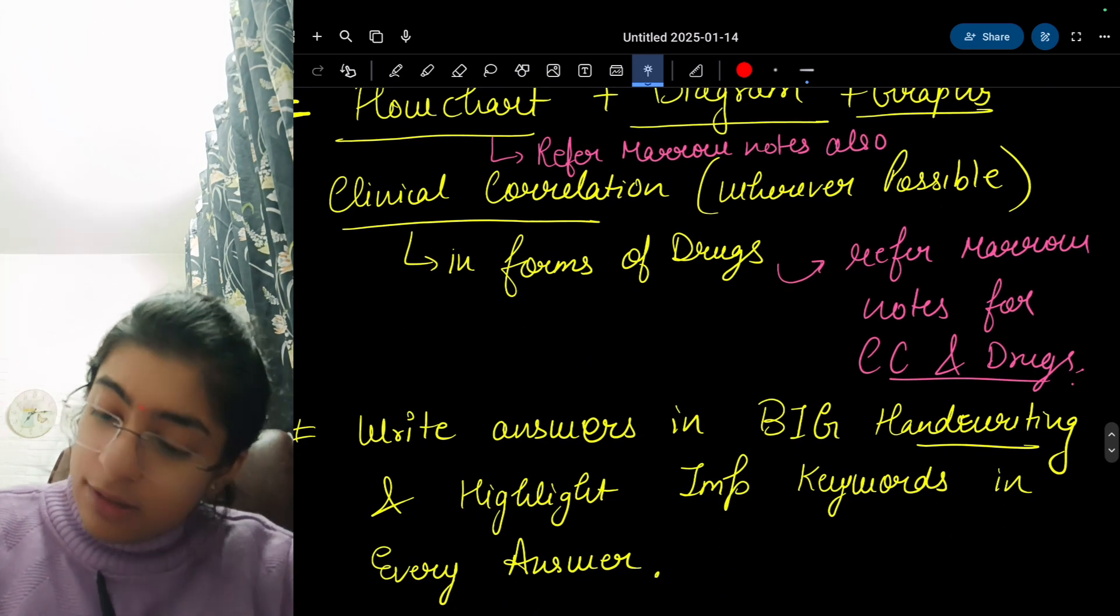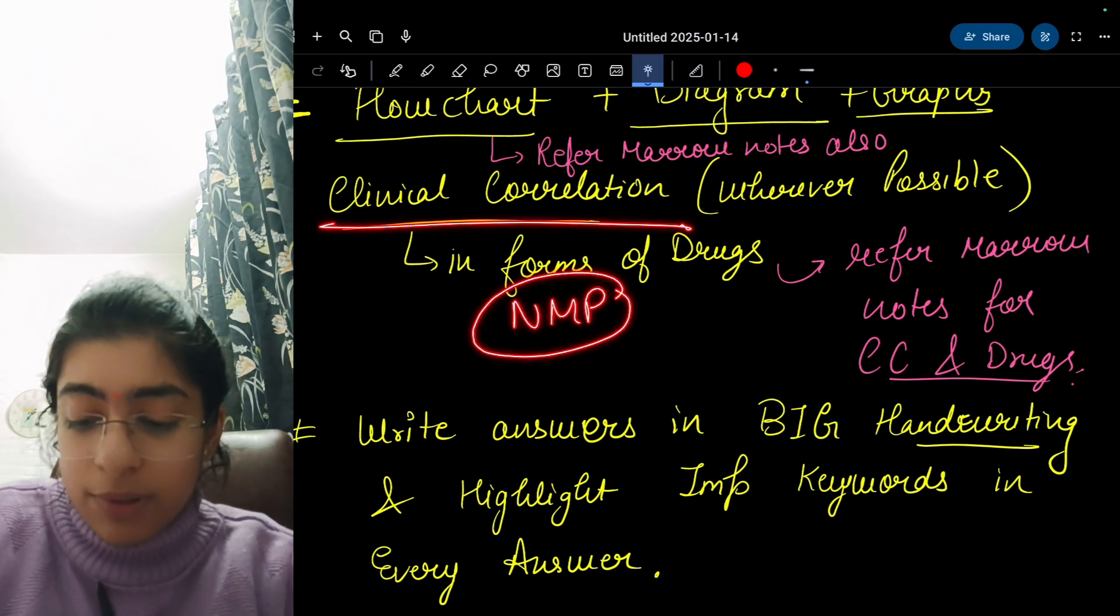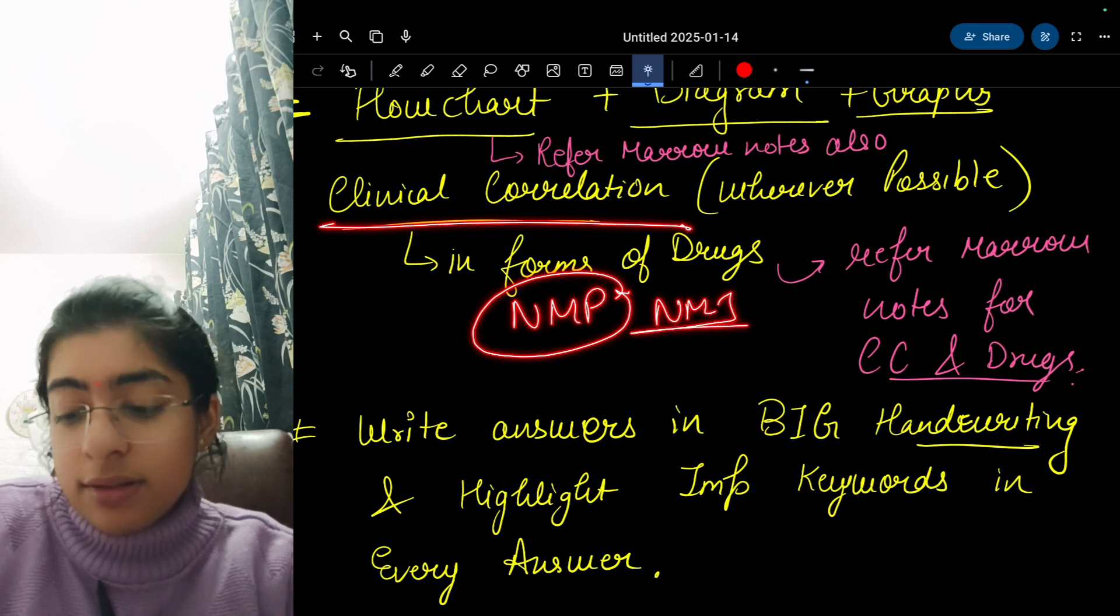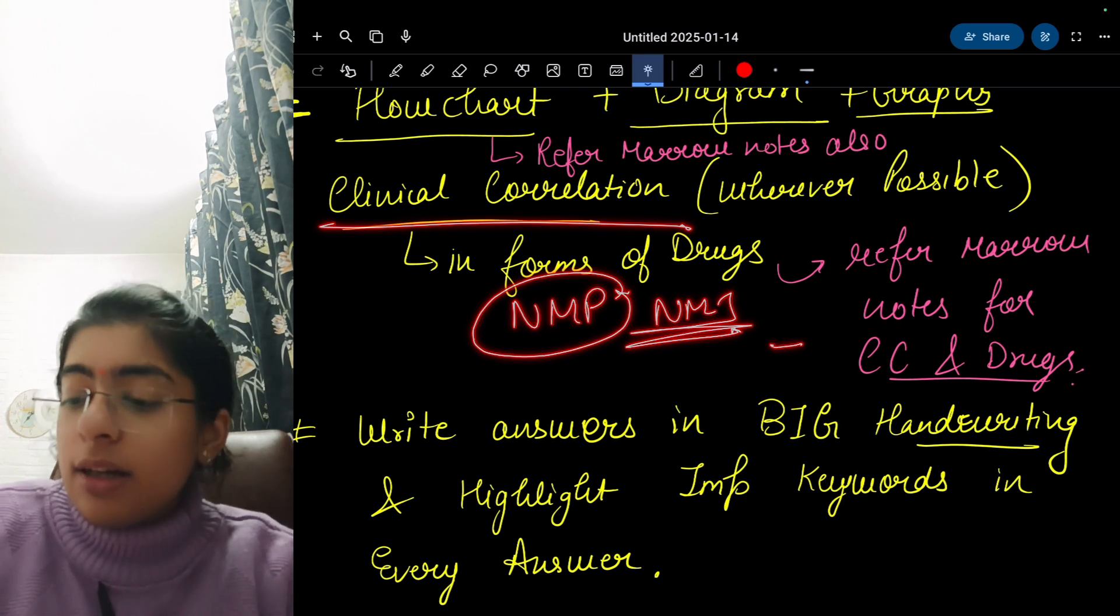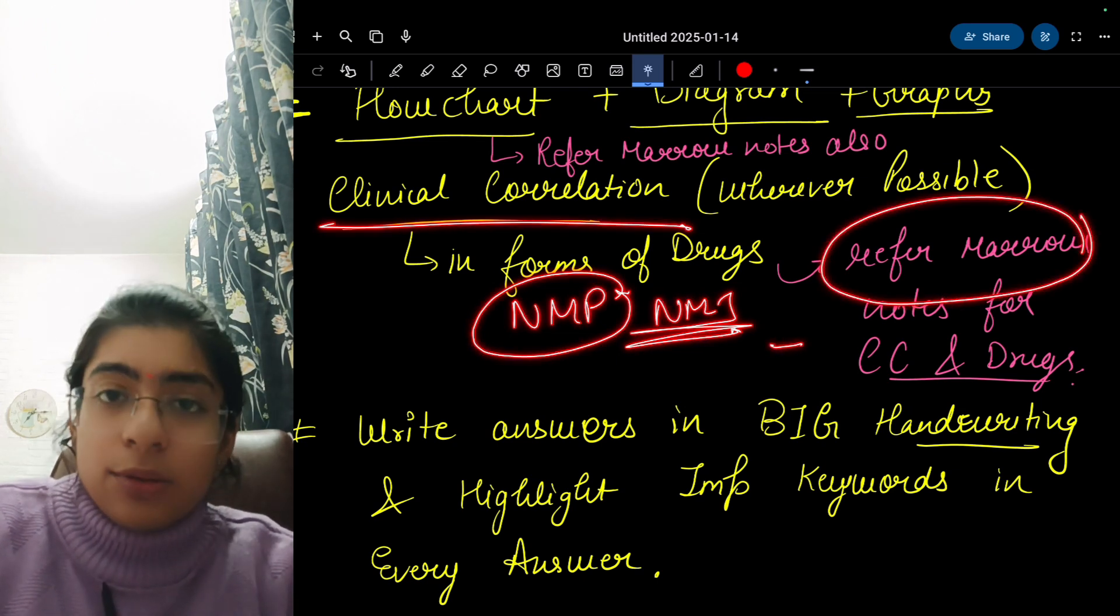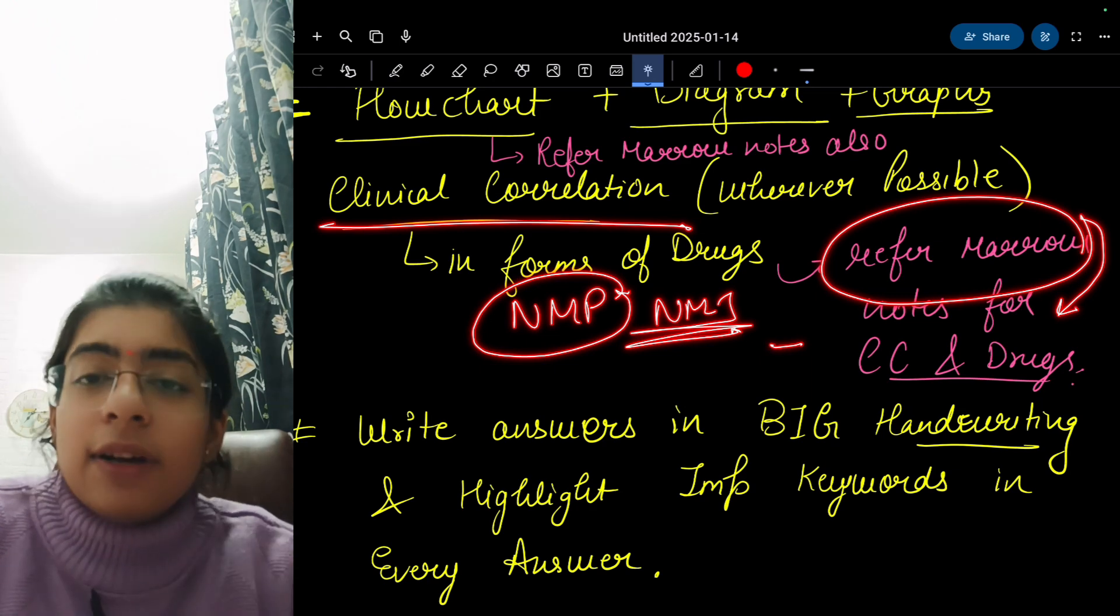For clinical correlation, for example in neuromuscular junction - I hope NMJ is coming in term 1 exams - we can see there are many drugs like hemicholinium, botulinum toxin, etc. These all are present in neuromuscular junction. You can refer to that if you can't find it in other books.